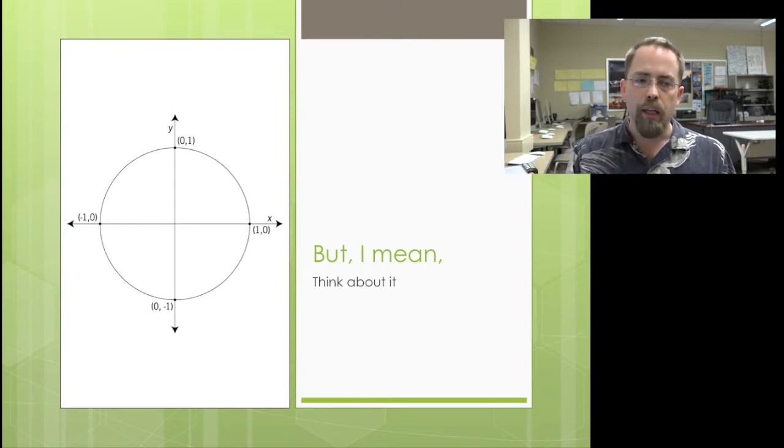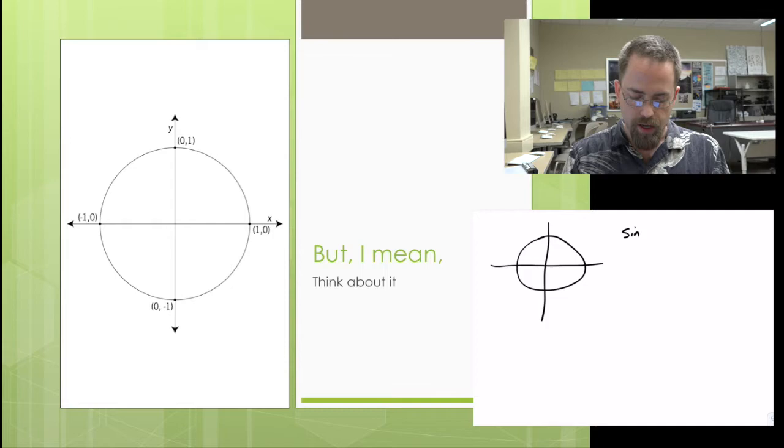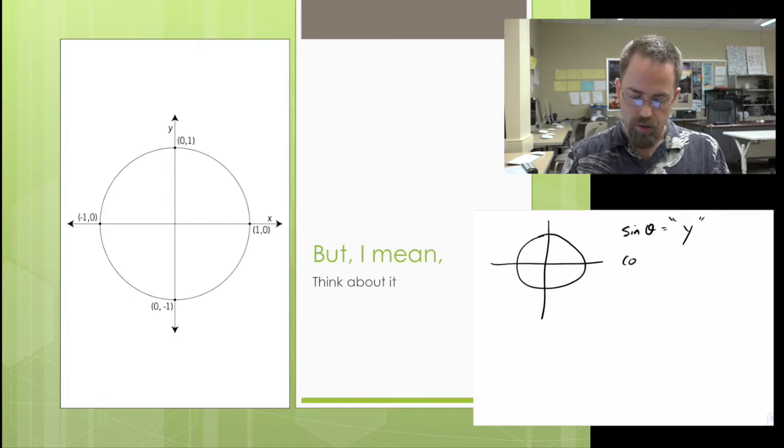But why are these domains limited? How can we think about this, and why would it be obvious? Well, what we've been saying about the unit circle is that sine represents, broadly speaking, the y value of the graph. And cosine represents, broadly speaking, the x value. And tangent represents the slope. These are the broad pictures about it.